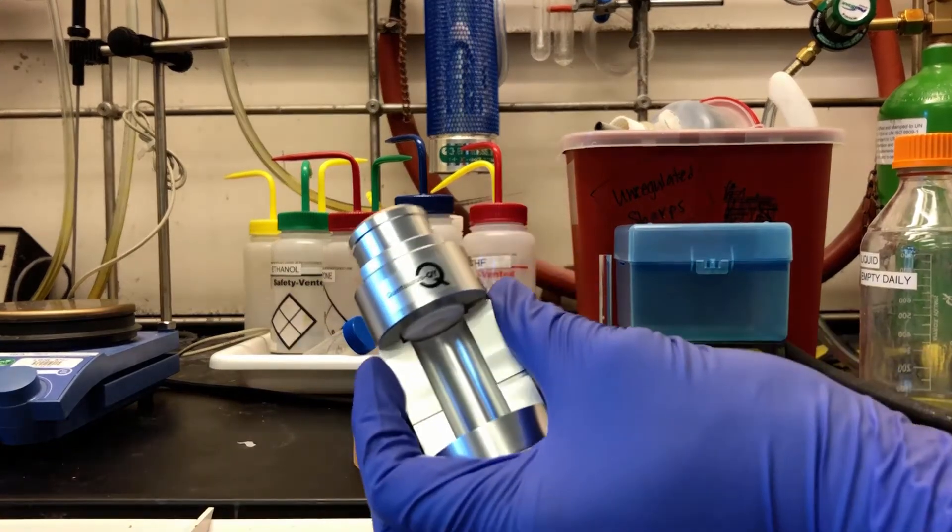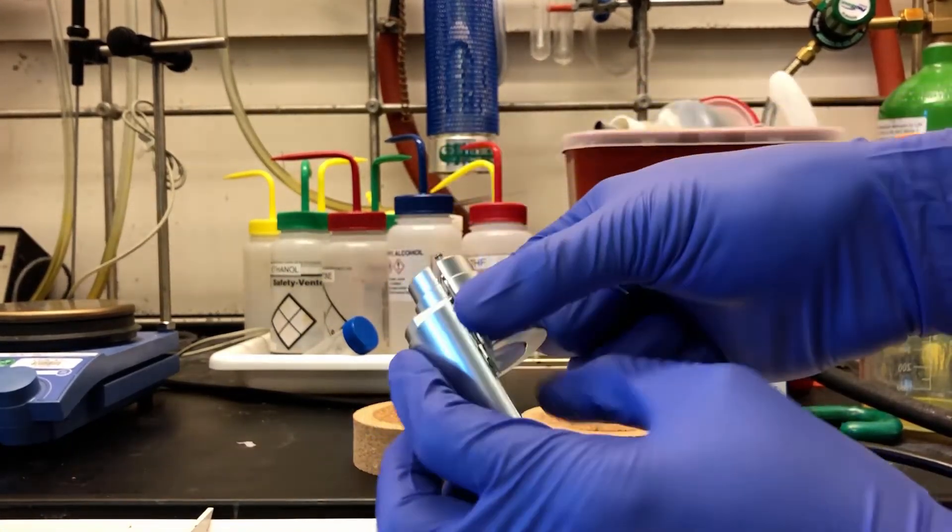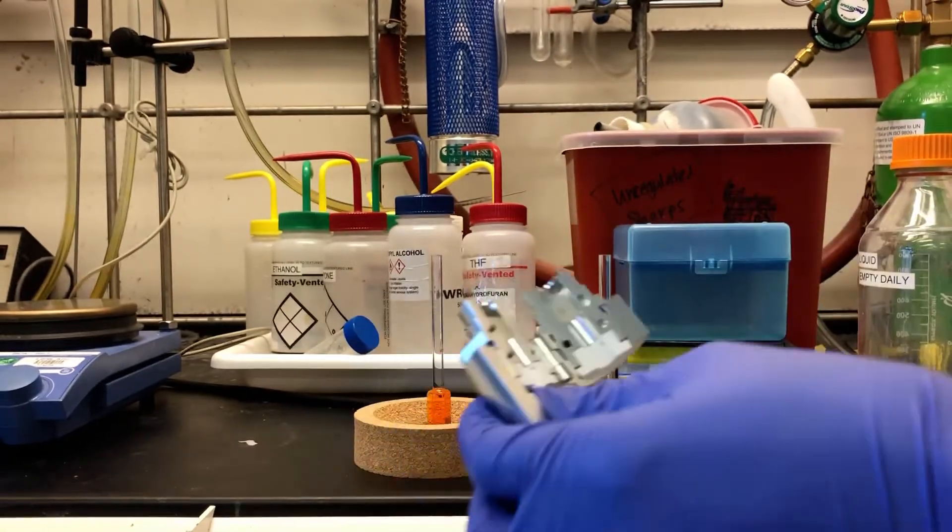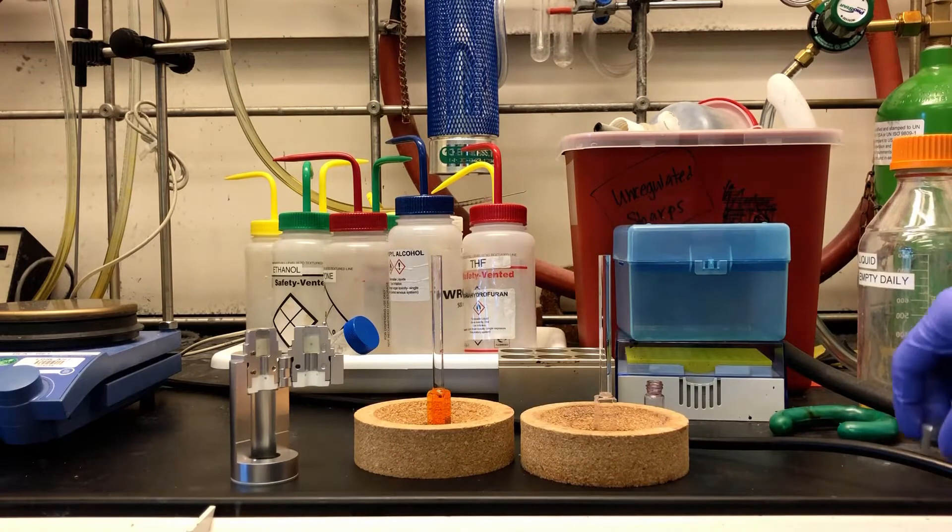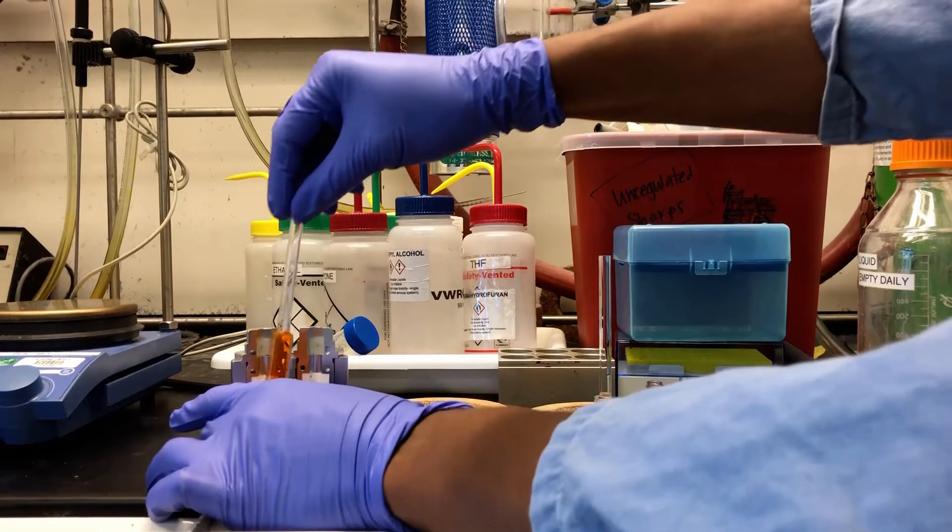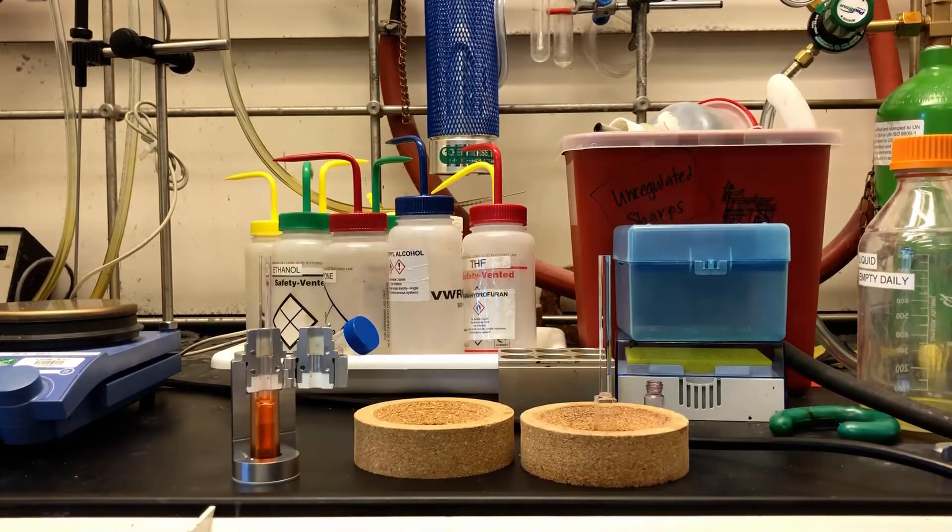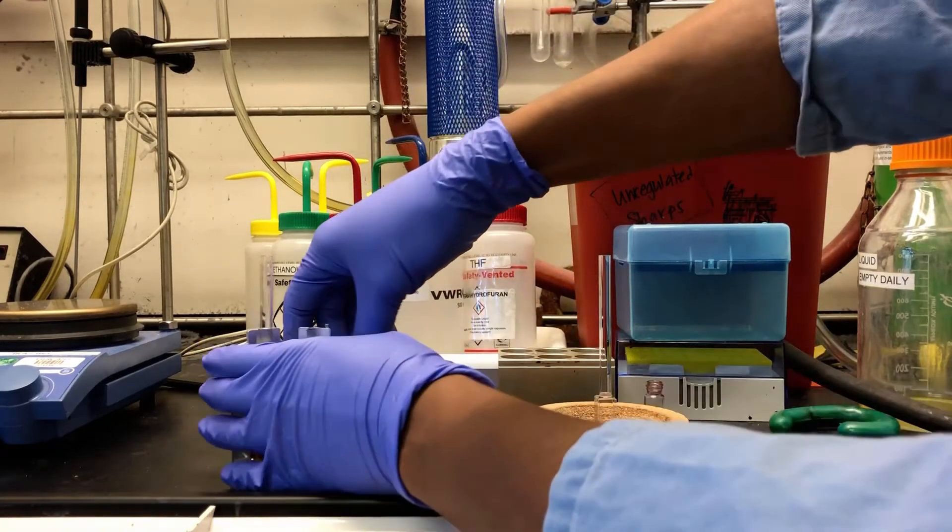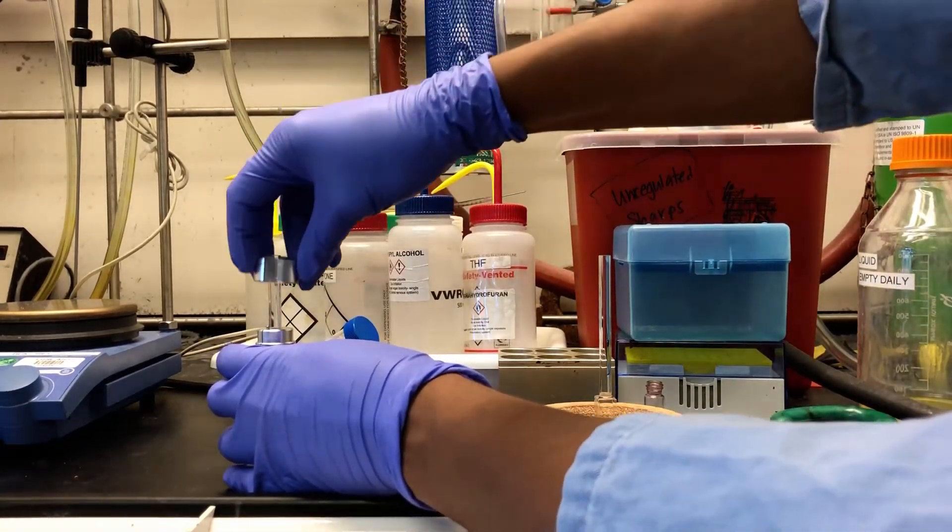There's a sample holder for quartz cuvettes that you can use while preparing your samples. Twist the ring on top to remove it. The two halves can be separated to install the cuvette. Once it's in place, cap the holder with the ring again to secure everything.